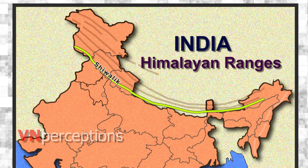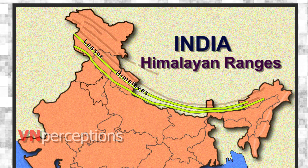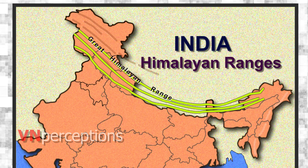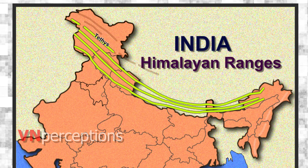They are also called the Shivalik range, then the lesser or lower Himalayas. Next, the great Himalayan range, known as the Himadri range, and the Tethys or Tibetan Himalayas. Further north lies the Trans-Himalayas.